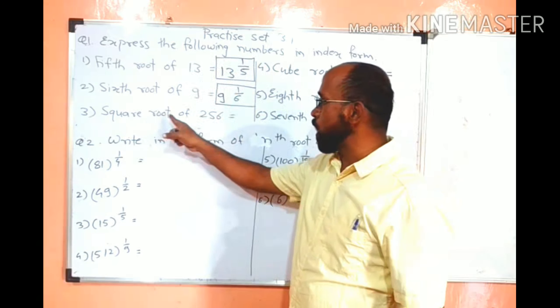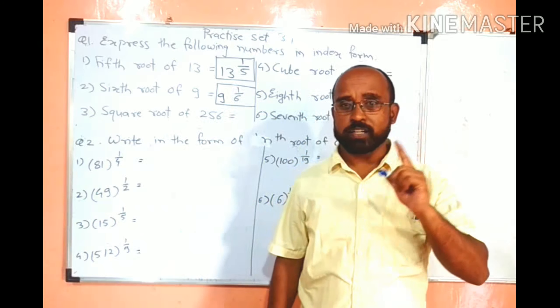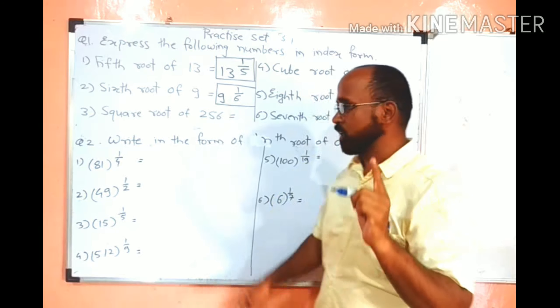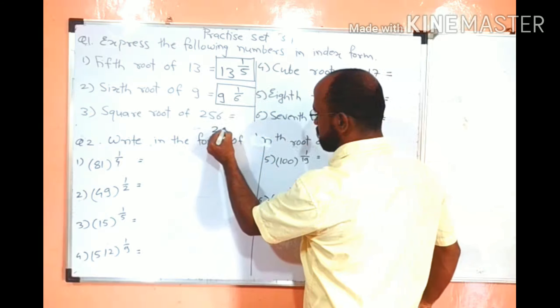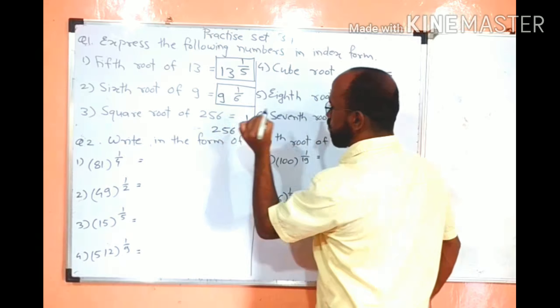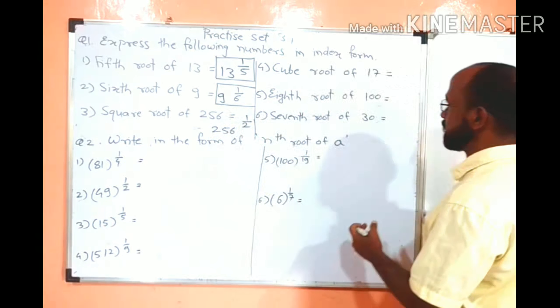Second. Square root of 256. Square root, square means which root? 1st, 2nd, 3rd, 4th, 5th. If your answer is 2nd, you are correct. Square root means 2nd root. So 256 will be base, and its 2nd root means 256 raised to 1 upon 2. Clear friends?